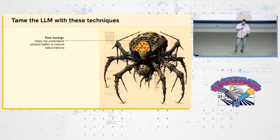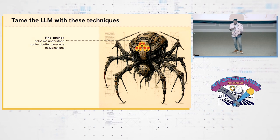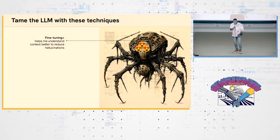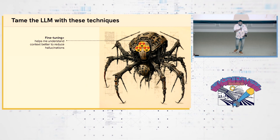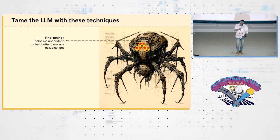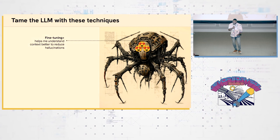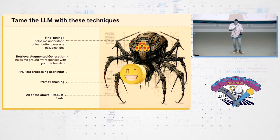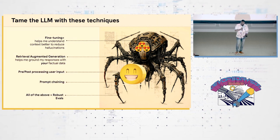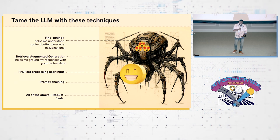Once you do that, there are other techniques. Fine-tuning being one of them, not to solve the confabulation or hallucination problem, but to actually teach the model your unique use case, tasks that matter to you, to tame it a little bit. Other things like RAG, retrieval augmented generation, post-processing and pre-processing your user's input, chaining prompts together so that it can actually reason through what it's trying to do are very important.